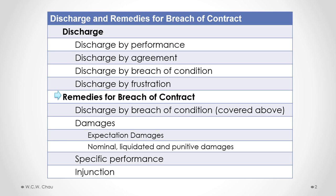The first one on this list in the table of contents is a discharge by breach of condition. We've already examined that when we were talking about the different types of discharge, so we won't repeat that again here. We'll jump to looking at damages, and the first and most common type is called expectation damages.